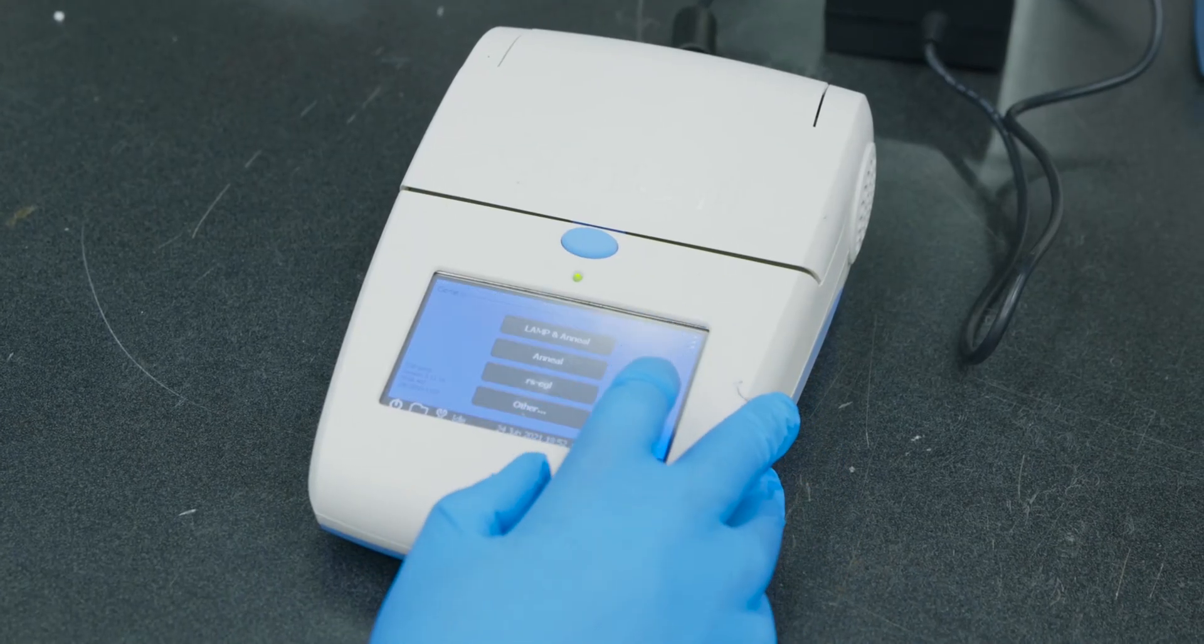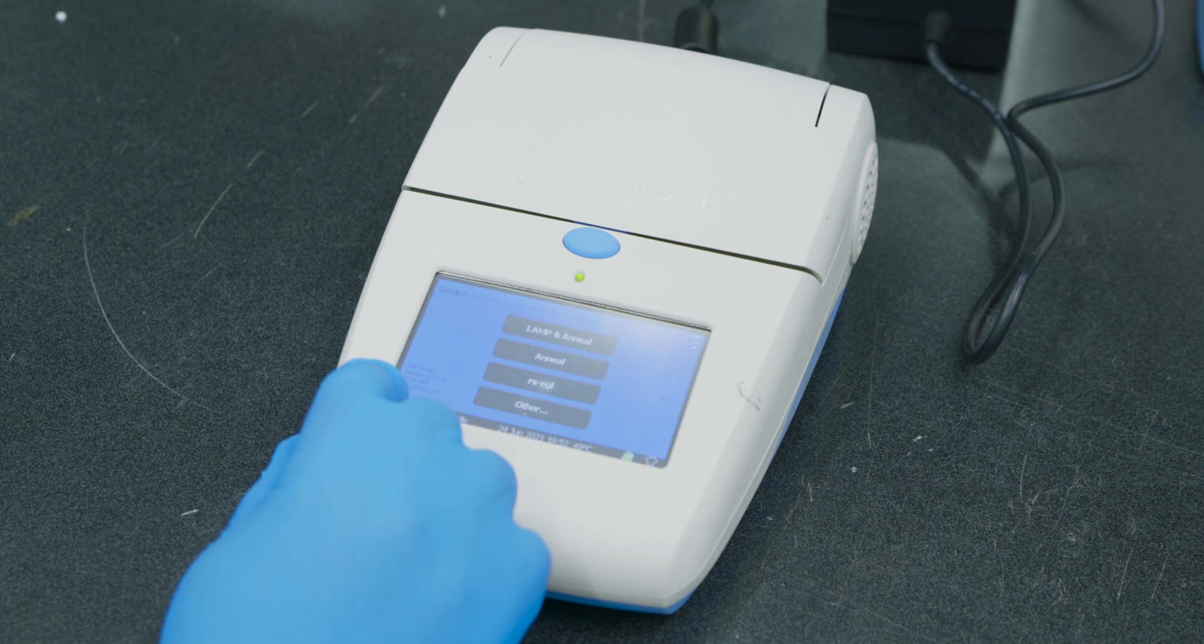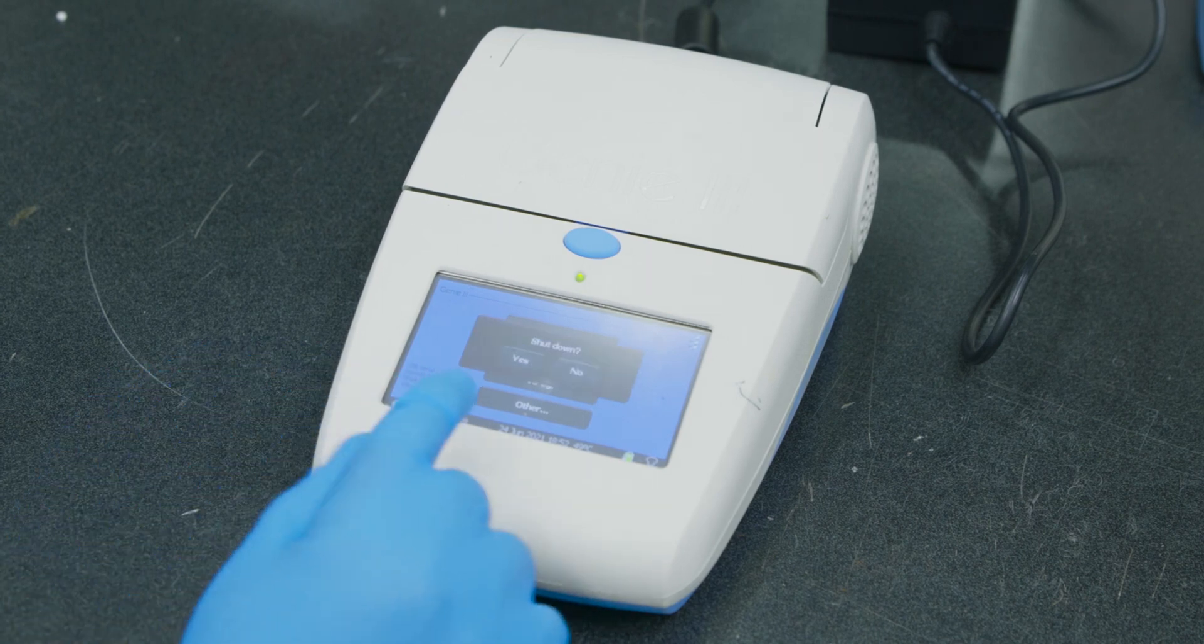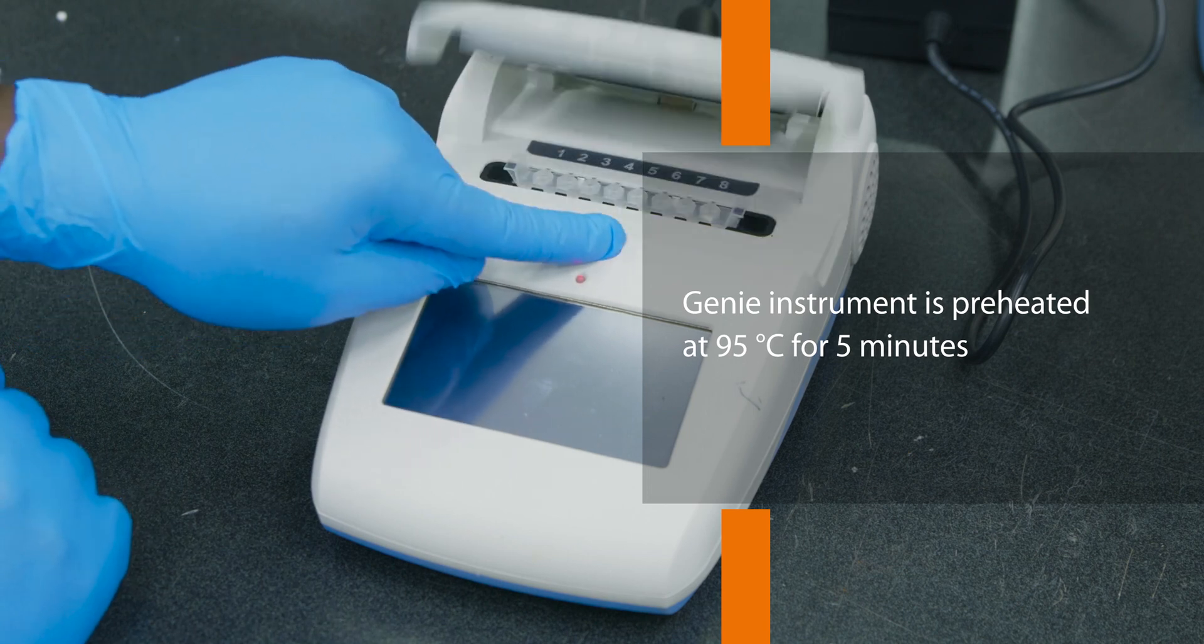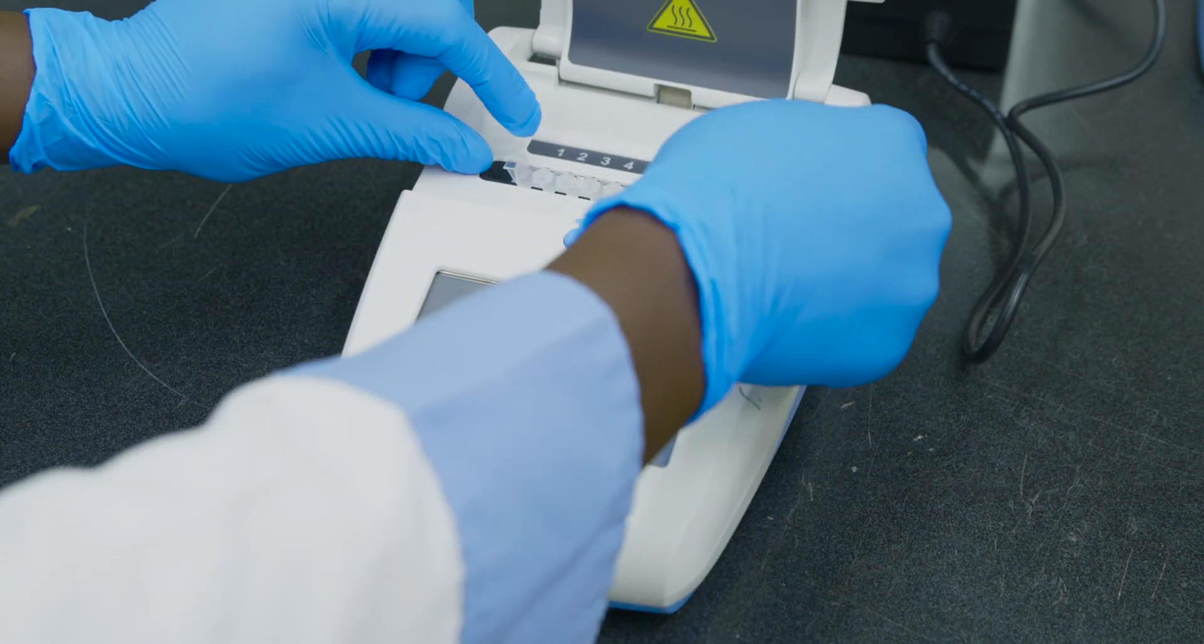If working in the lab, the alkaline PEG step can be avoided by using heat in lysing. In this case, the Genie instrument is preheated at 95 degrees Celsius for 5 minutes.